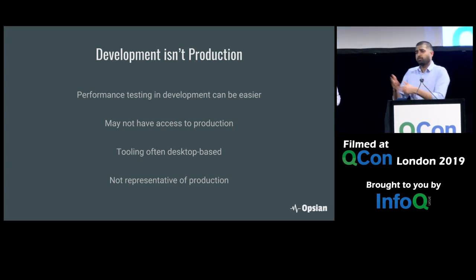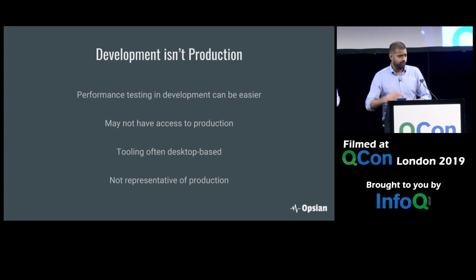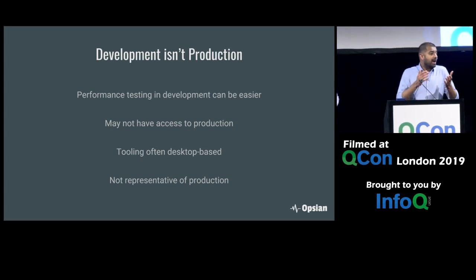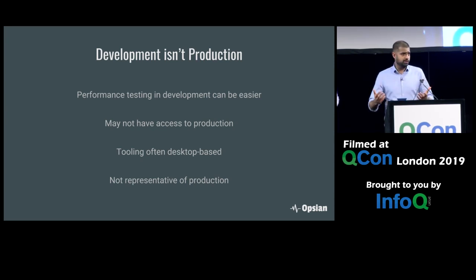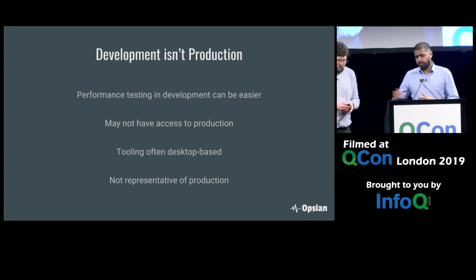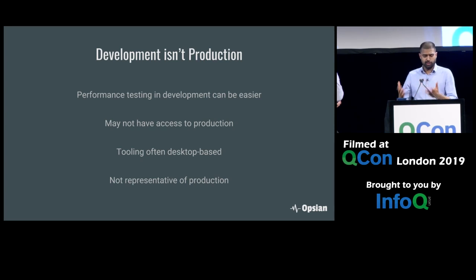Performance testing in development is easier — the tools we're used to are desktop profilers like JProfiler and VisualVM. You may not even have access to production due to organizational or regulatory reasons. But as easy as it is to do performance testing in development, it is not representative of production, and our goal is to actually understand the performance of production.